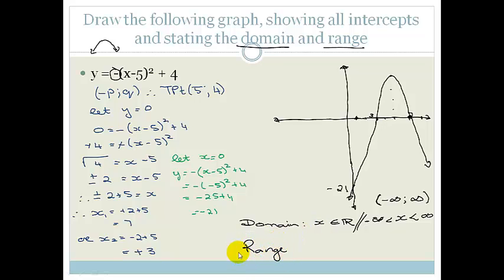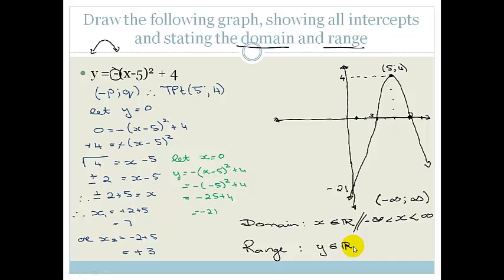The range is how far the graph extends on the y-plane. The turning point is at (5, 4), so the highest point of this parabola is y = 4. Anything above that there is no more parabola. So we can say y is an element of real values but y must be smaller than or equal to 4.